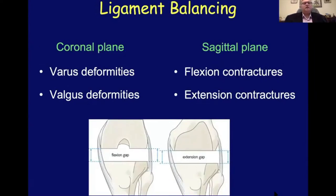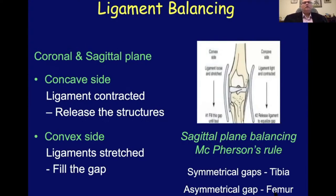When looking at ligament balancing, it needs to be done in both the coronal plane — addressing varus and valgus deformities — and in the sagittal plane for flexion and extension contractures. A simplistic way of looking at ligament balancing is on the concave side, where the ligament is contracted and structures need to be released, or on the convex side, where ligaments are stretched and the gap needs to be filled. In the sagittal plane, McPherson's rule is: if the gap is symmetrical, further release is required on the tibia; if asymmetrical, the femur needs to be addressed.